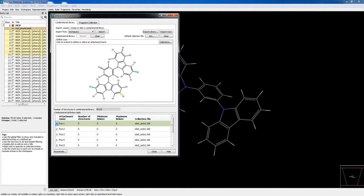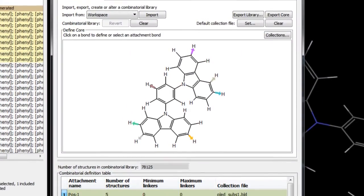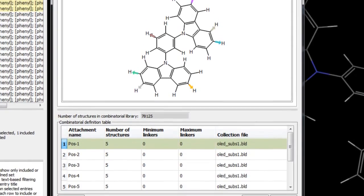In this video exercise we will demonstrate how to generate a large focus library of chemical compounds using the interactive enumeration panel in the material science suite.